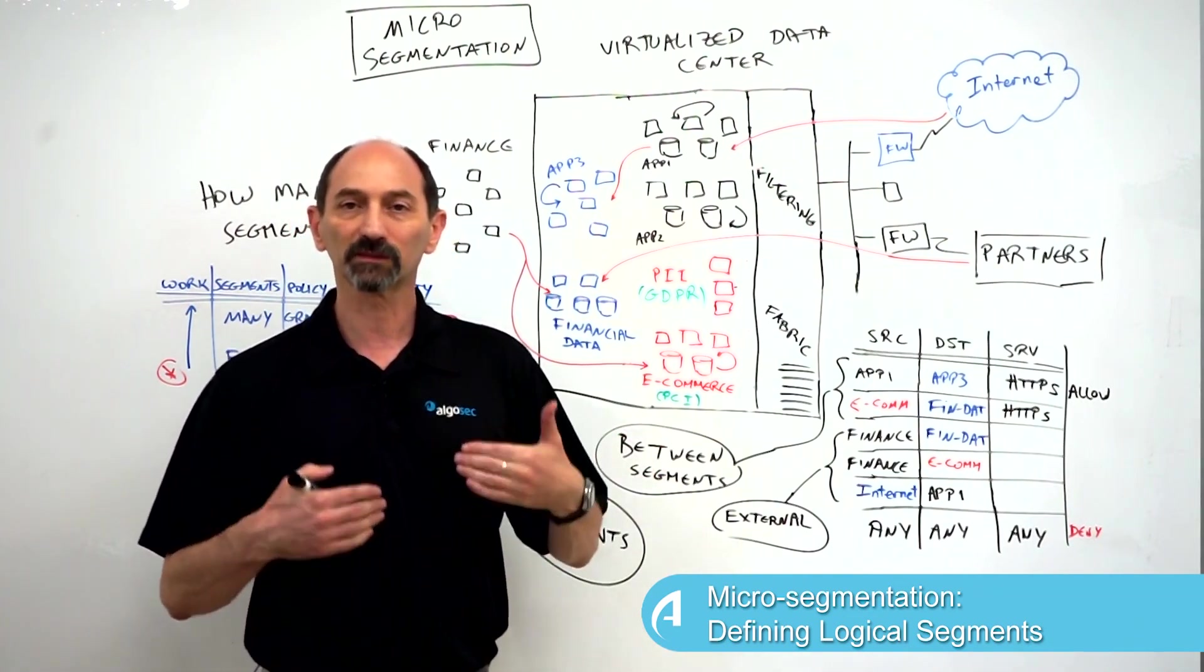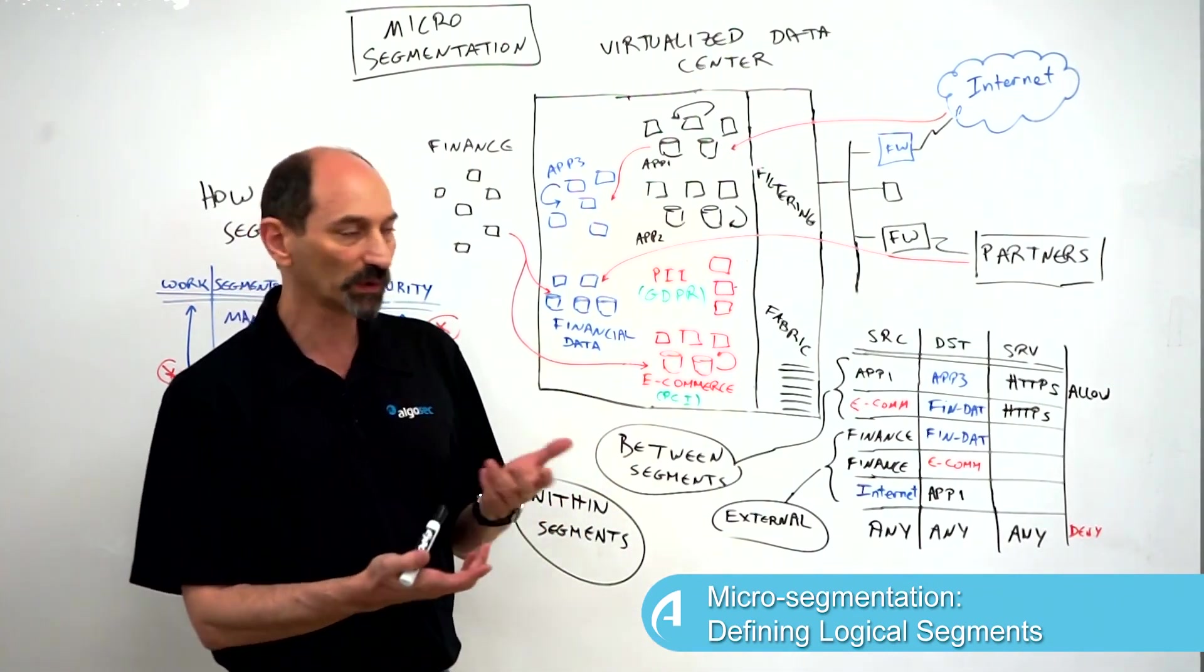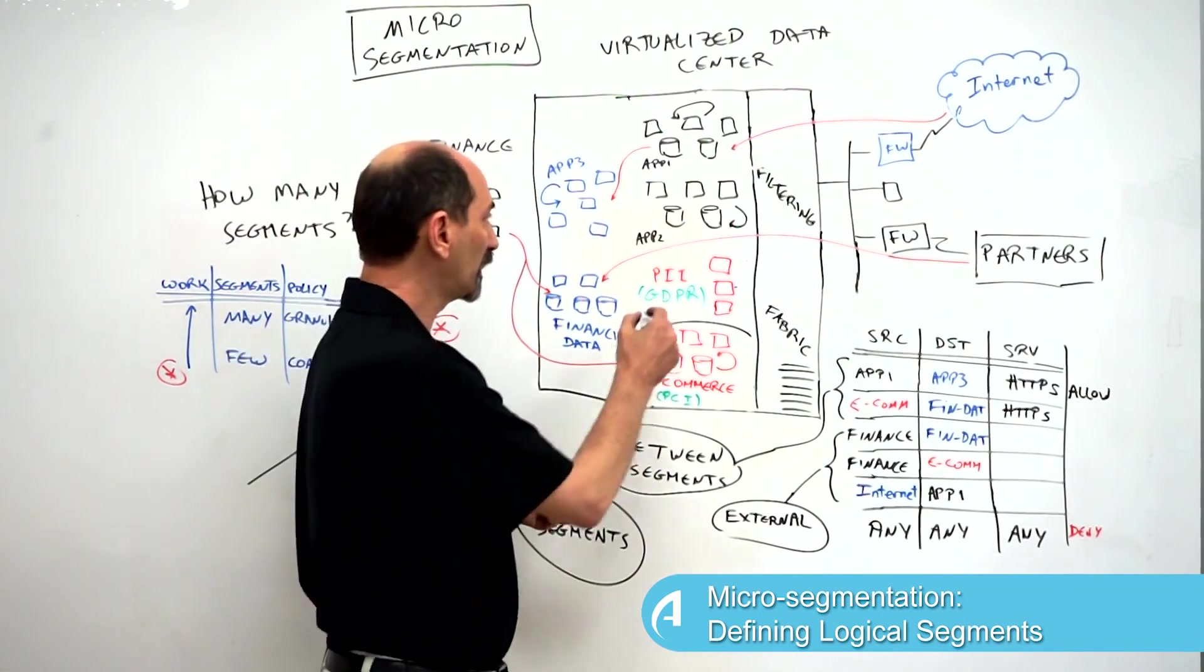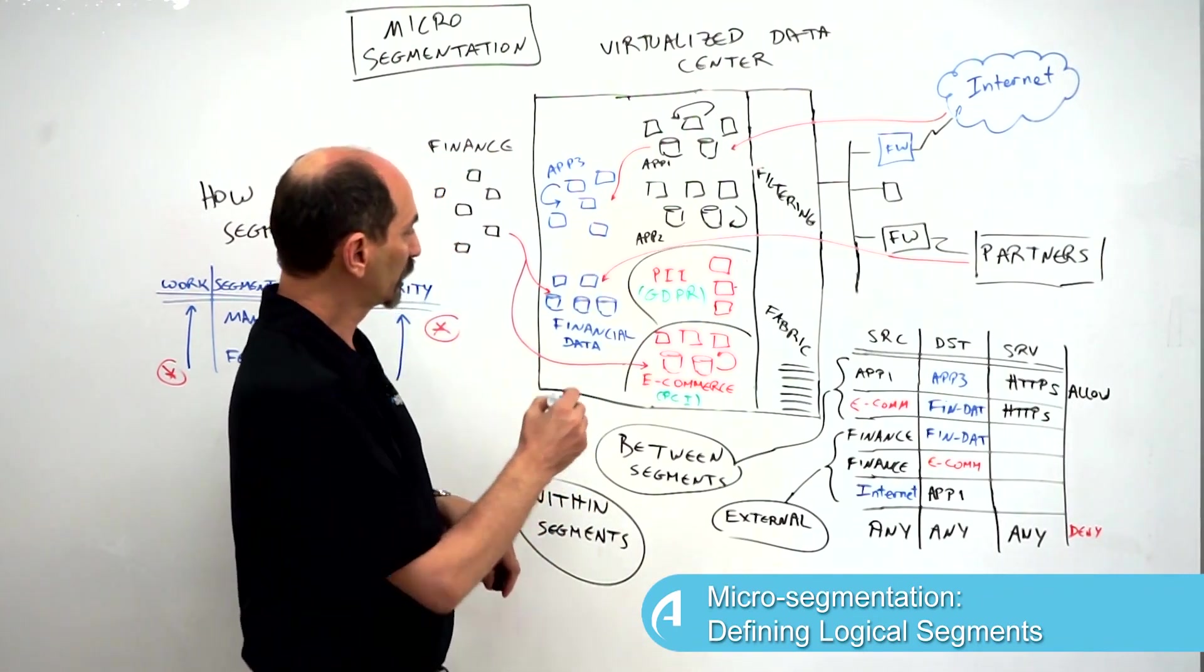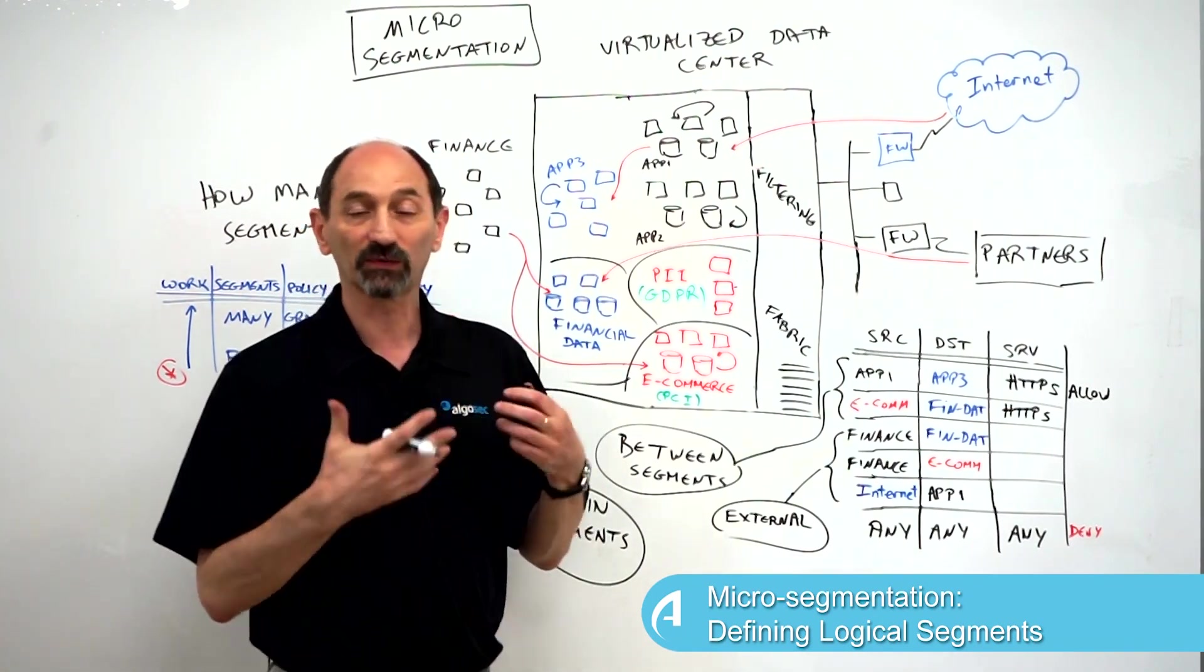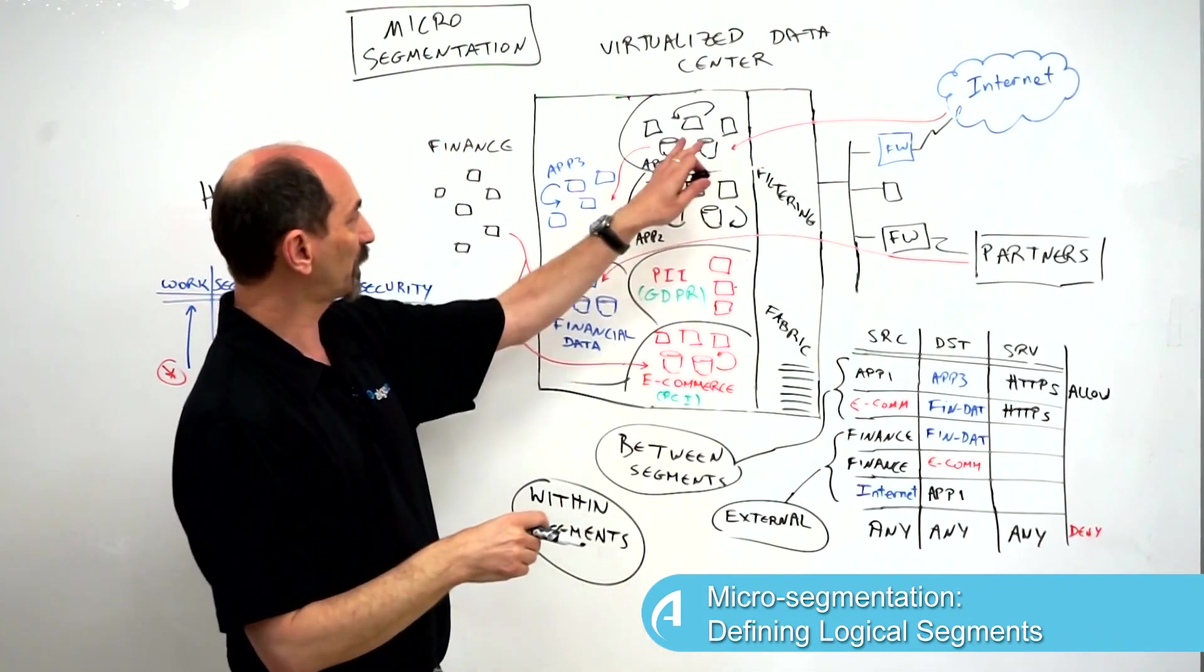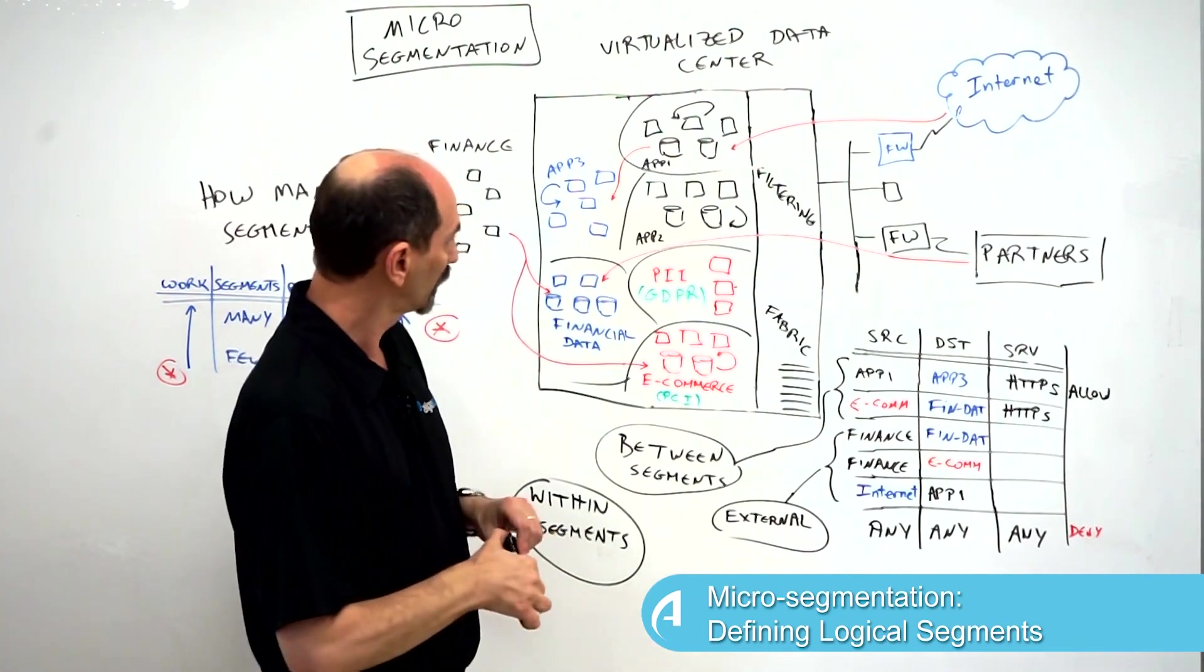We have a reasonable picture in our mind what's communicating what and what types of information are present in the data center, and then we can move ahead and actually start defining the segments. Based on this information, we could define data-driven segments. We could define a segment over here for the regulated PCI data, we could define a segment over here for personally identifiable information, we could define a segment over here for the financial data. Then we could also define segments that are based on traffic that we've discovered. We can define zones and segments over here for the applications - applications 1, 2, and 3 - that we've identified through our traffic discovery.